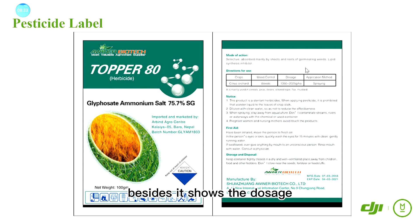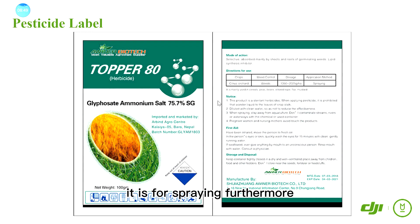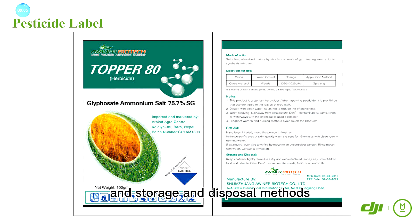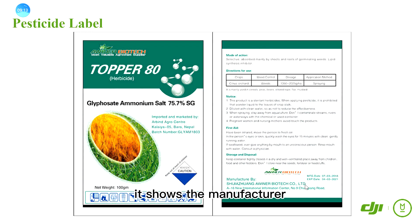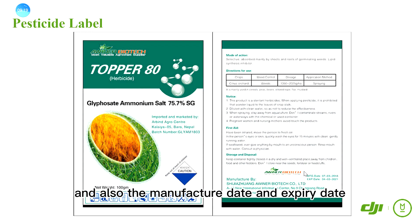The label shows the dosage you can use per hectare and how to use it — it is applied by spraying. Furthermore, the label shows the notice, first aid instructions, and storage and disposal methods. On the bottom right, it shows the manufacturer name, address, and the manufacture date.